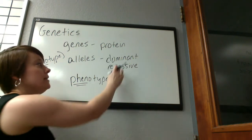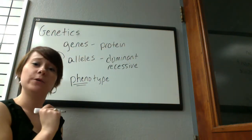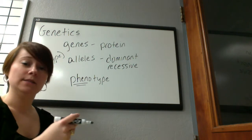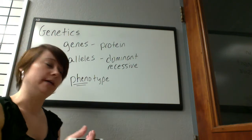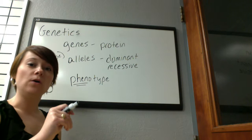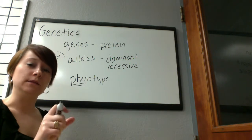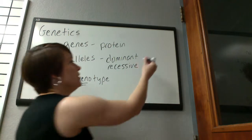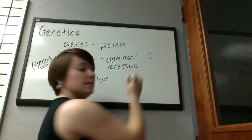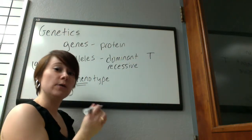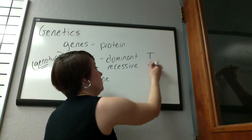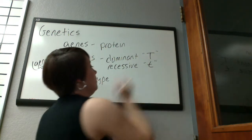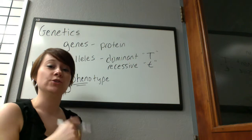Dominant alleles are typically indicated when writing them out by an uppercase letter. For example, Mendel studied pea plants — and in pea plants, the allele for tallness is dominant to the allele for shortness. So tallness would be indicated by an uppercase T, and the lowercase t would be the recessive allele — the short allele.